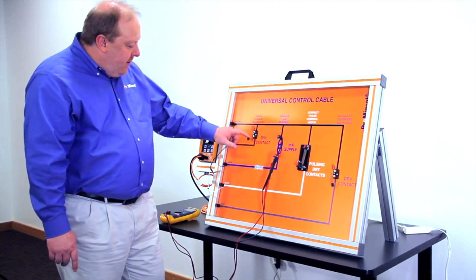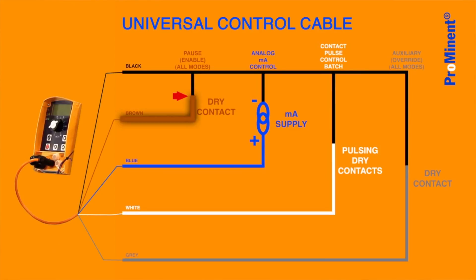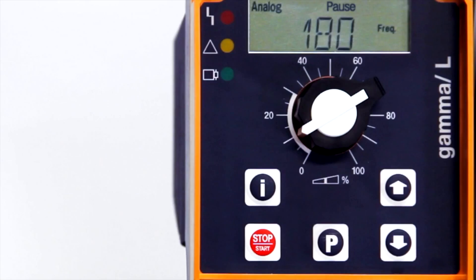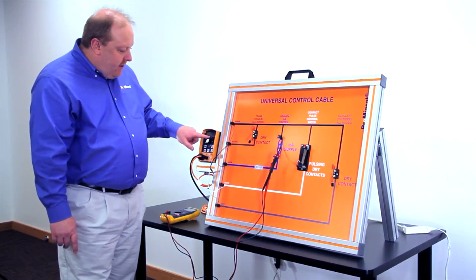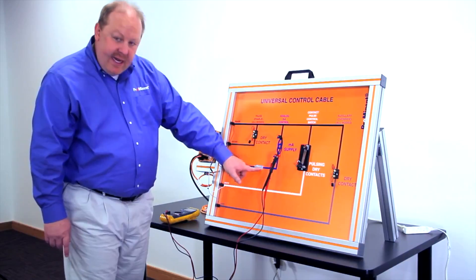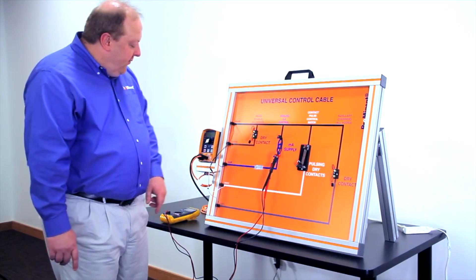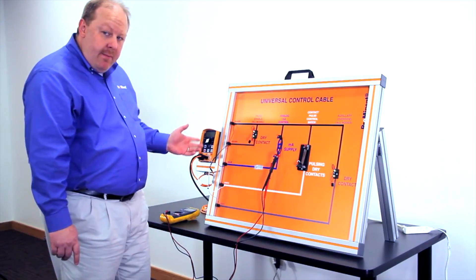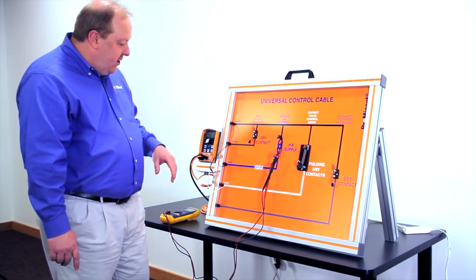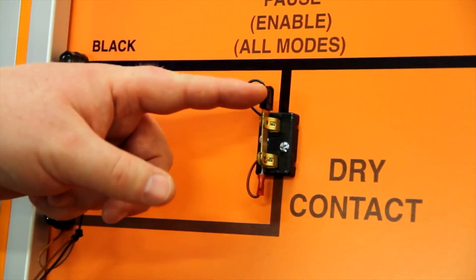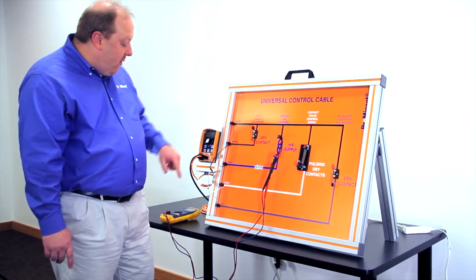If we open the contact between the brown wire and the black wire, the pump goes into a pause, but the loop is still maintained. We still see 20 milliamps through that circuit. So if we had more than one pump, we could stop one pump independent of the other pump just by opening the dry contact between the brown wire and the black wire.